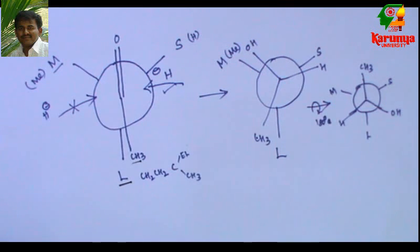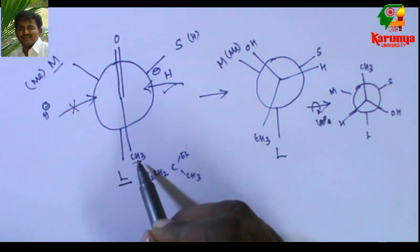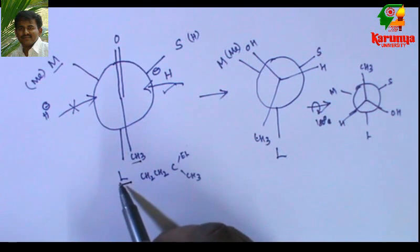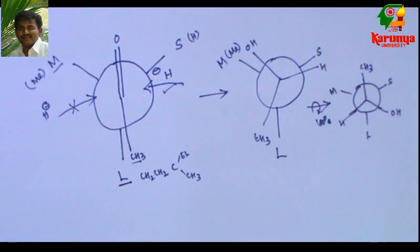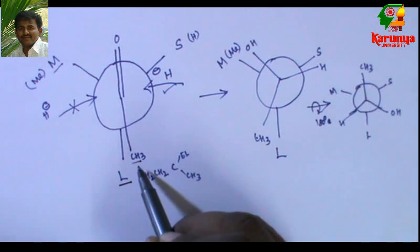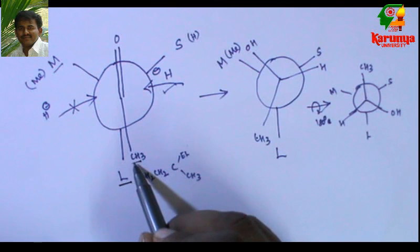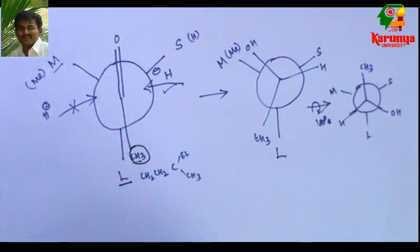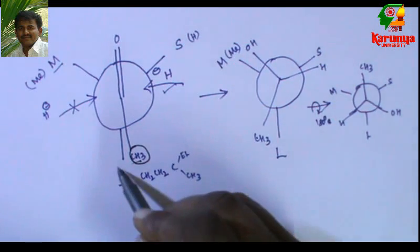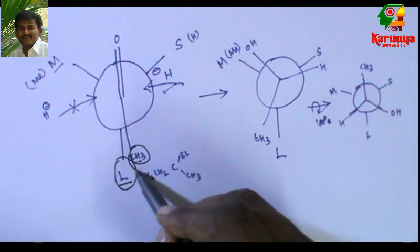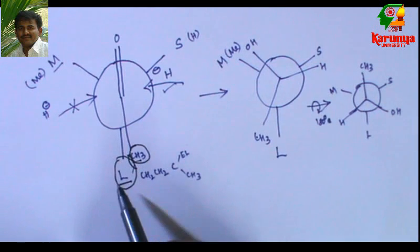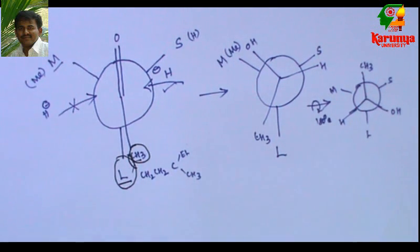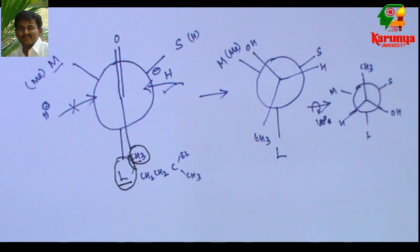If it is aldehyde, then this will be hydrogen. The steric hindrance between the larger group and hydrogen will be somewhat less. But when we go for ketone, this will be somewhat bulkier. So because of that, the steric hindrance between this alkyl and the larger group will be huge. That was not taken into consideration in the Cram's model. So Felkin proposed another model.